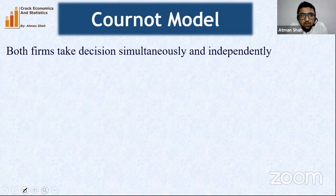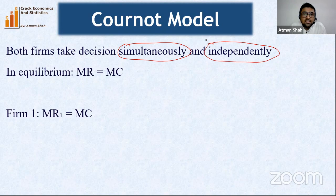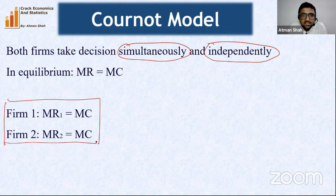Both firms take decisions simultaneously and independently. In equilibrium, marginal revenue equals marginal cost. Firm 1 is in equilibrium when MR1 = MC, and firm 2 is in equilibrium when MR2 = MC. Since marginal cost is zero, we need to find the marginal revenue of each firm.